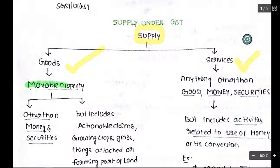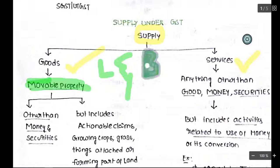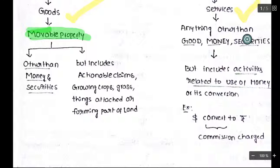What is a good? A good is a movable property. The definition of goods includes movable property and does not include immovable property, so land and building are not called goods. The definition of goods excludes money and securities, which is why income tax is levied on securities and STT is levied on securities, but no GST.